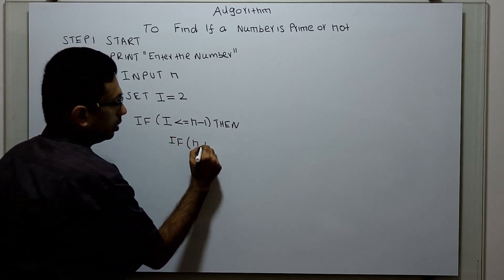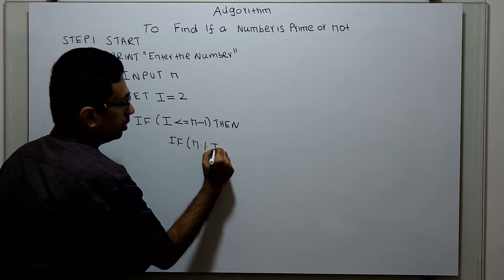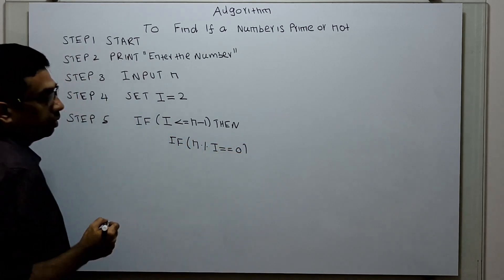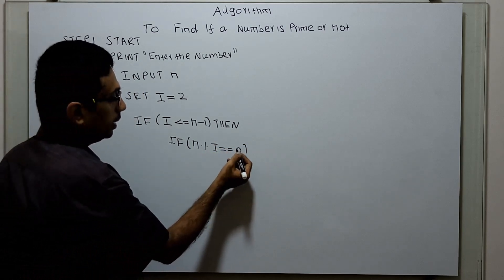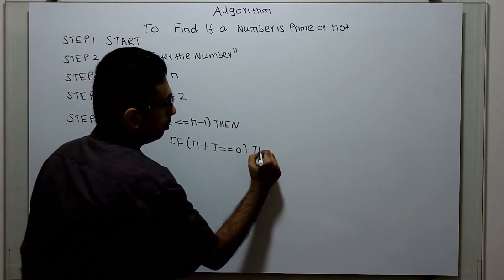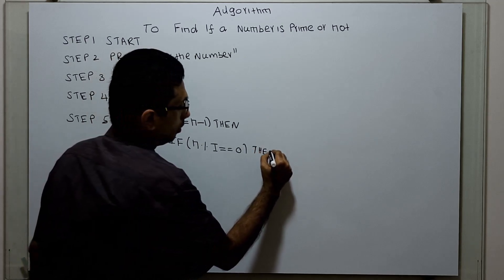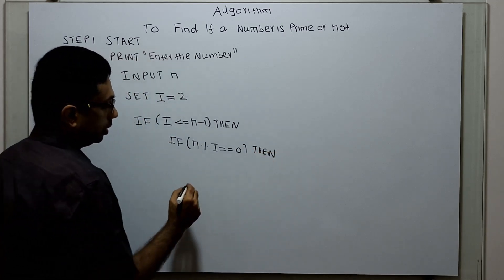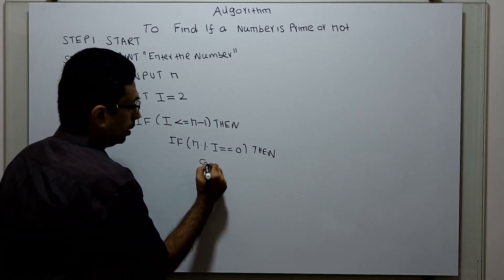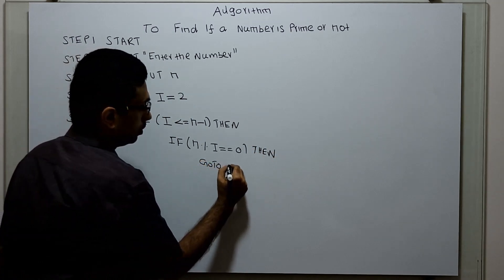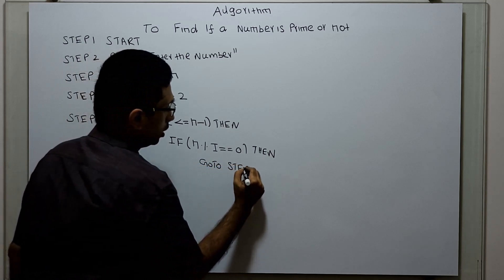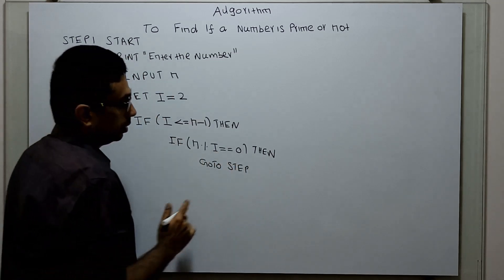If n modulo i equals 0 — that is, when I divide n by i and the remainder is 0 — I am transferring the control out of these statements, i.e., out of this loop.